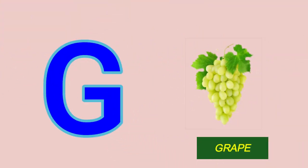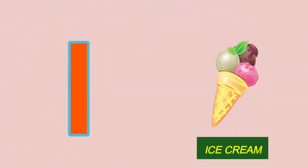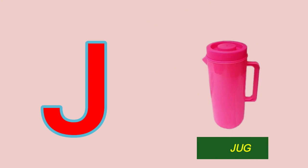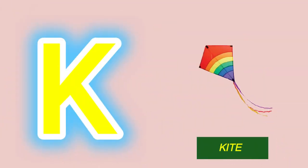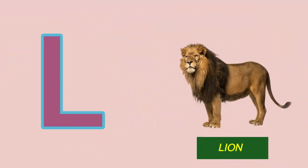G for grapes, H for hen, I for ice cream, J for jug, K for kite, L for lion.